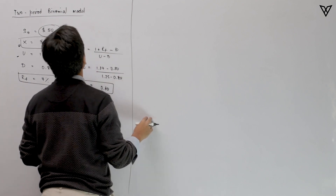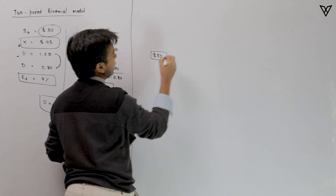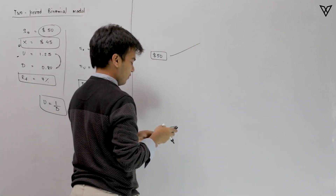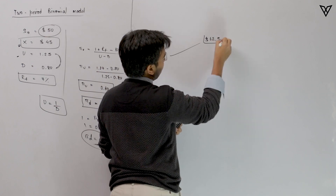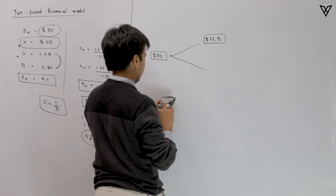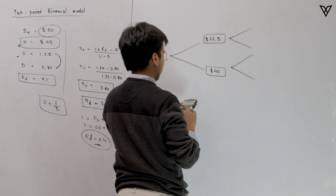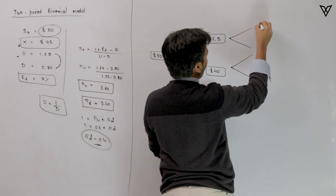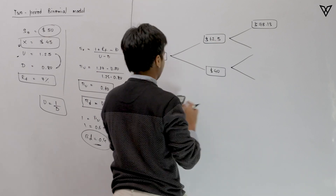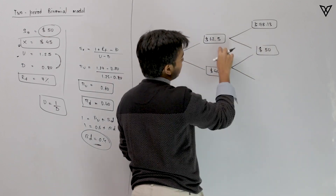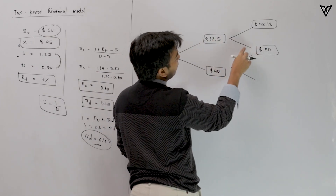We need to figure out the value of the call option using a two-period binomial model. Starting with $50, the stock can go up by the up factor of 1.25 to $62.5, or go down by the down factor of 0.8 to $40. From $62.5, it can go up again to 62.5 × 1.25 = $78.13, or come back down to 62.5 × 0.8 = $50. That middle node of $50 is common to both paths.